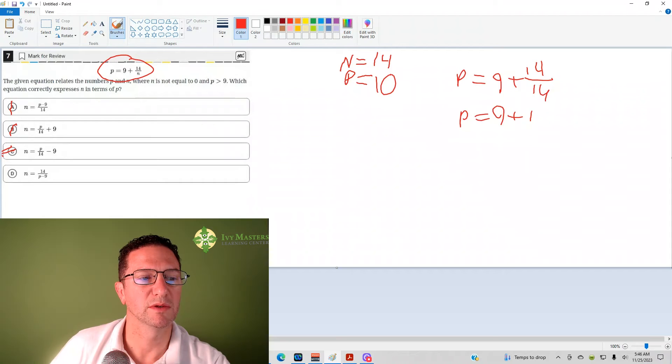And then when I plug p equals 10 into answer choice D, I get 10 minus 9, which is 1, times n equals 14. So my answer's going to be D.